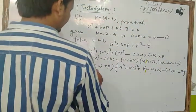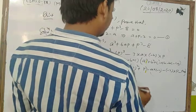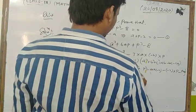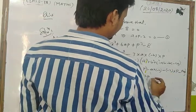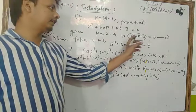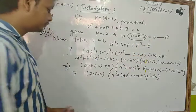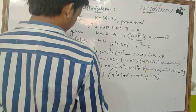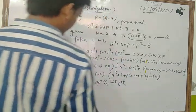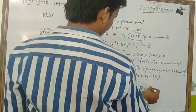From equation (1), a + p - 2 = 0. So the entire expression equals 0 × (second bracket) = 0. Hence LHS = 0 = RHS, and the result is proved.